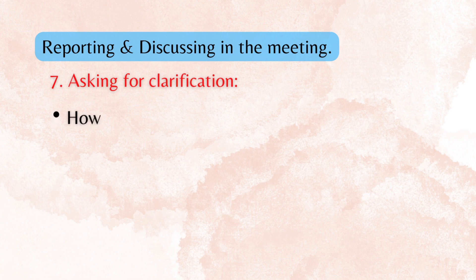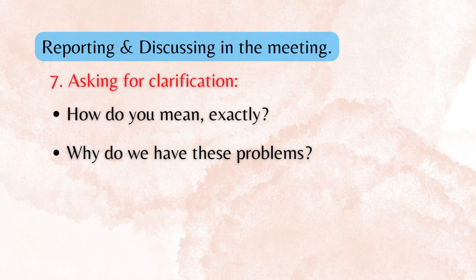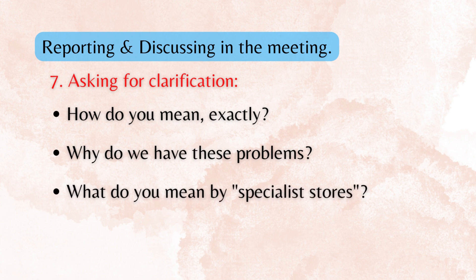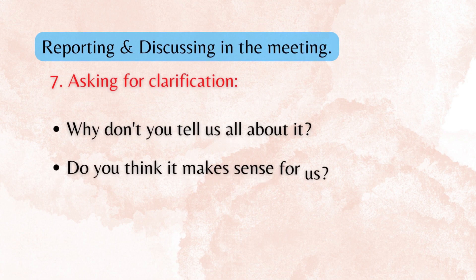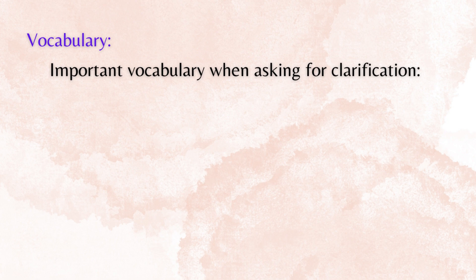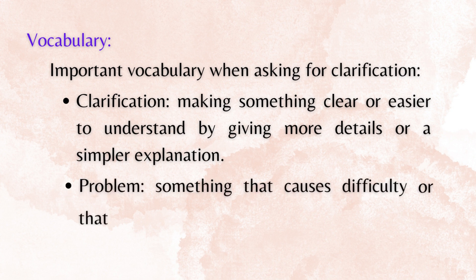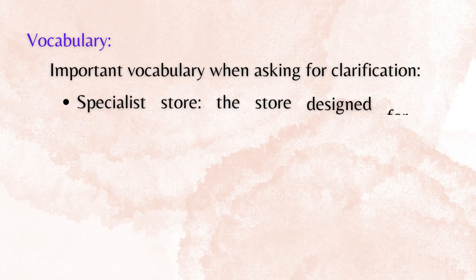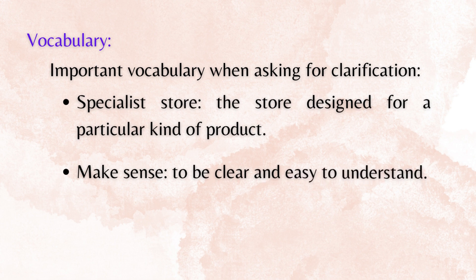7. Asking for clarification. How do you mean, exactly? Why do we have these problems? What do you mean by specialist stores? Why don't you tell us all about it? Do you think it makes sense for us? Important vocabulary: Clarification — making something clear or easier to understand by giving more details or a simpler explanation. Problem — something that causes difficulty or that is hard to deal with. Specialist store — a store designed for a particular kind of product. Makes sense — to be clear and easy to understand.